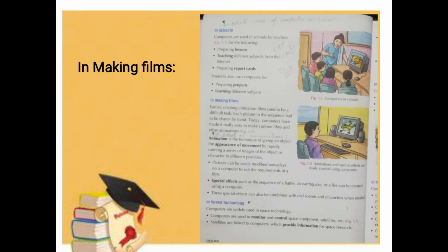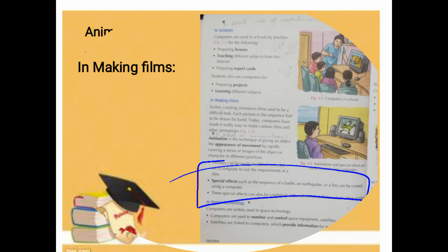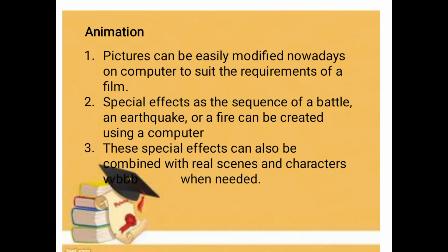Now we read the third paragraph, which tells about the different uses of animation. I have written all three points here on the slide. Let's read them out. 'Pictures can be easily modified nowadays on computer to suit the requirements of a film.' So pictures can be easily modified - whether the character needs to run, talk, lip sync, move eyes or hands - all movement according to film requirement is very easily done with the help of a computer.